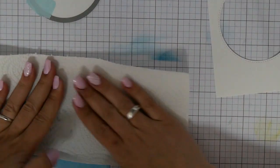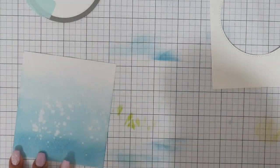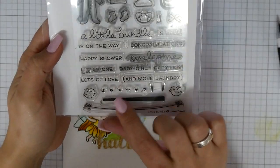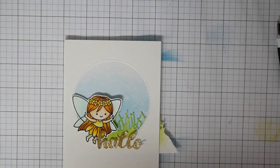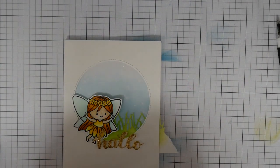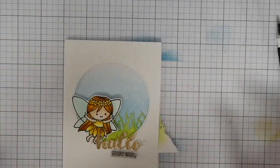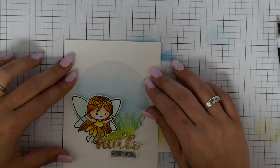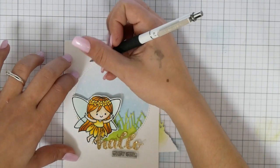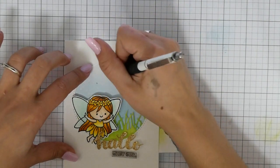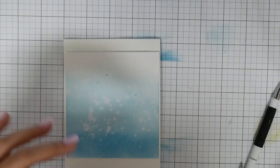For my sky scene I splattered some drops of water on top of it and created this distressed background. I used here the hello die cut from Create a Smile. You also get this die cut in English and I stamped baby girl under it.